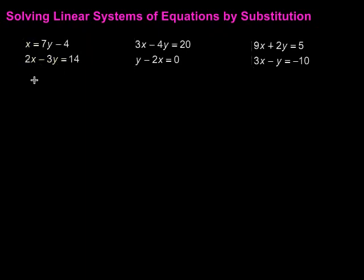For example in this first one, this is already solved for x. The first equation says x equals 7y minus 4. Well since x is equal to 7y minus 4 what I can do is in my second equation I can rewrite and anywhere that I see an x I can replace that with 7y minus 4. Then just continue rewriting the rest of my equation. So 2(7y - 4) minus 3y equals 14.